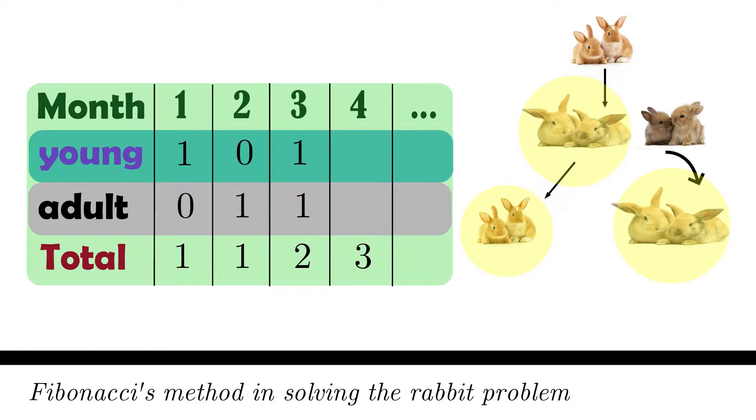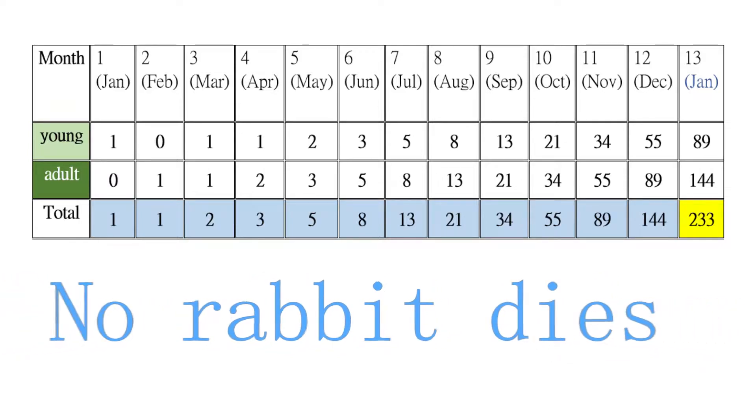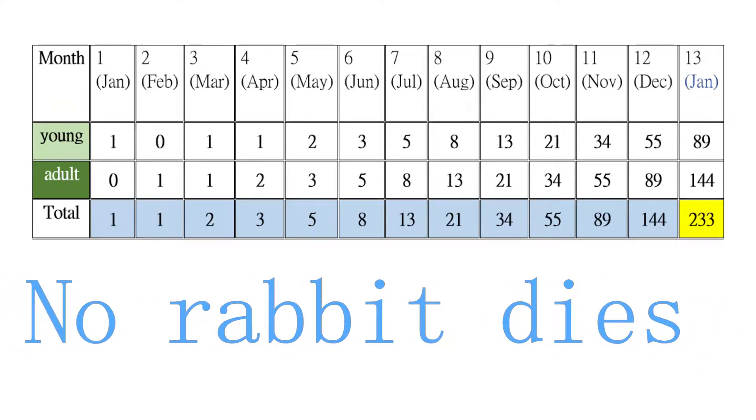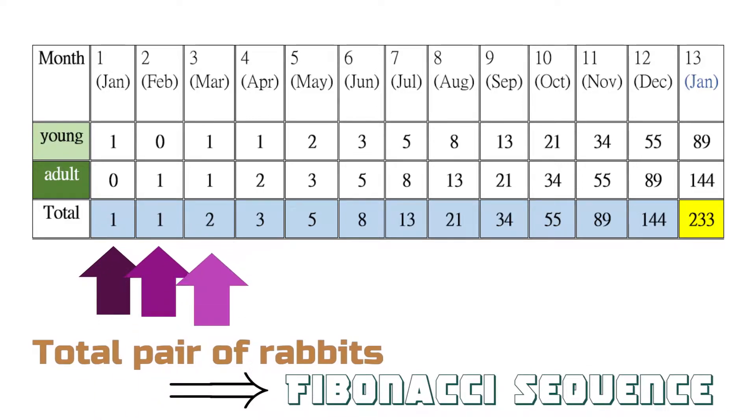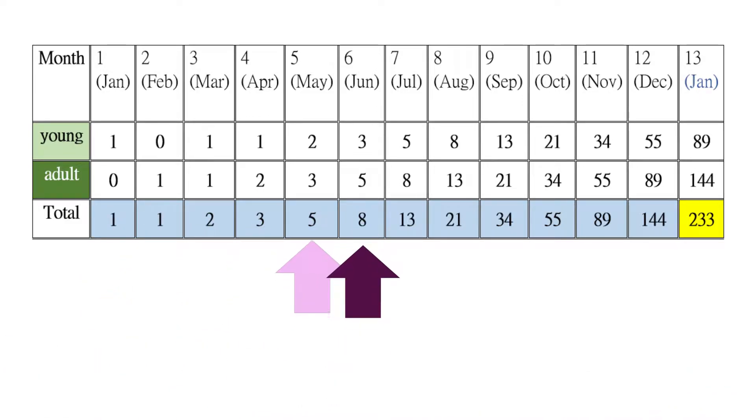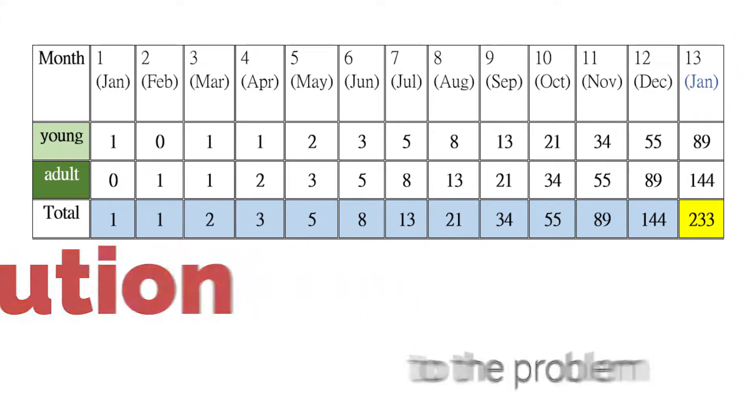So a family of three rabbit pairs are present at the start of the fourth month, and so on. Take a look at the table to see a total pair of rabbits after one year, assuming none of the rabbits dies. The number of total rabbit pairs at each generation constitutes a Fibonacci sequence, and the number of rabbit pairs at the start of the 13th month can be taken as the solution to Fibonacci's puzzle: that is 233.